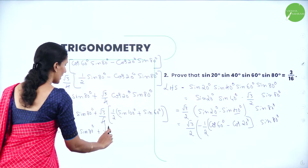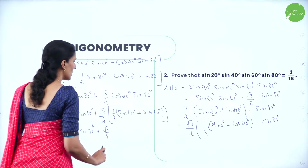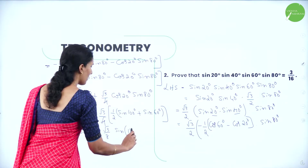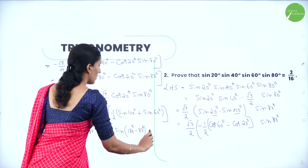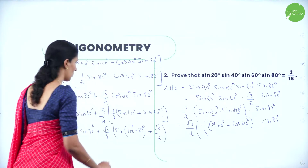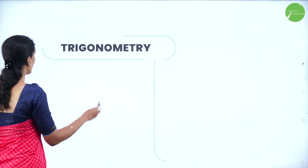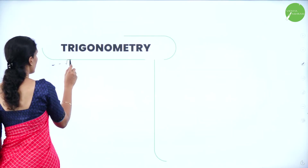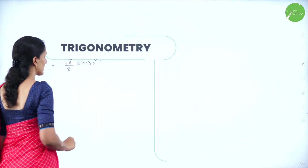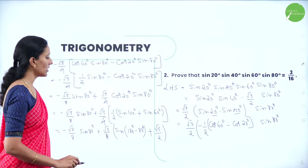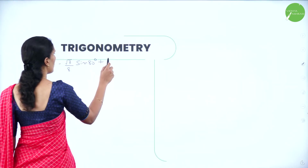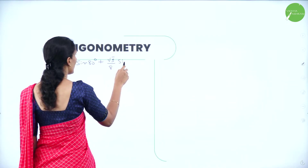So we have −(√3/4)·[(1/2)sin80° − ½(sin100° + sin60°)]. This becomes −(√3/8)·sin80° + (√3/8)·[sin100° + sin60°]. Now sin100° = sin(180°−80°) = sin80°, and sin60° = √3/2.